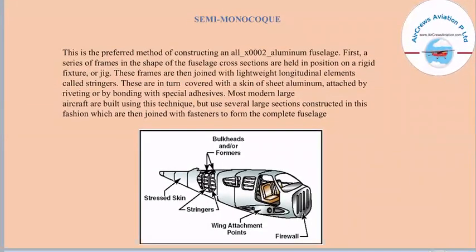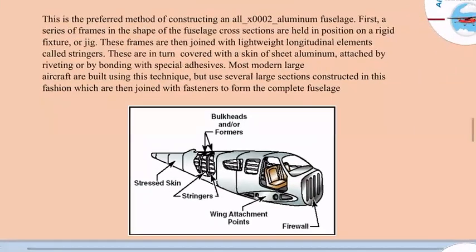Semi-monocoque is the preferred method for constructing an all-aluminium fuselage. First, a series of frames in the shape of the fuselage cross-section are held in position on a rigid fixture or jig. These frames are then joined with lightweight longitudinal elements known as stringers, which are in turn covered with a skin of sheet aluminium attached by riveting or bonding with special adhesives. Most modern large aircraft are built using this technique, with several large sections joined by fasteners to form the complete fuselage.